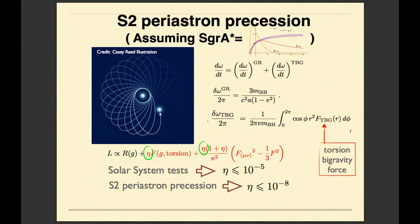Which means that if the object in the galactic center is my black hole, it means that torsion bigravity is restricted.